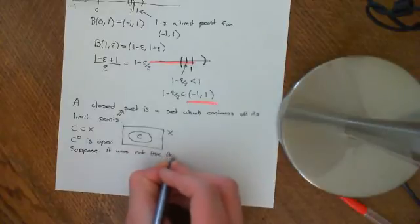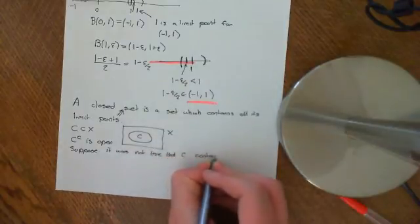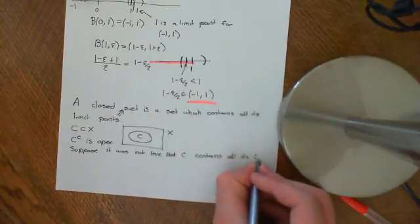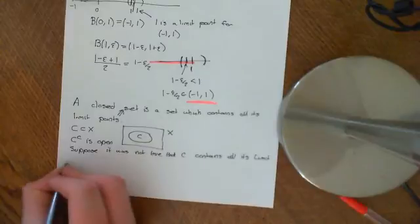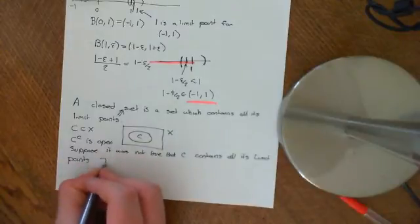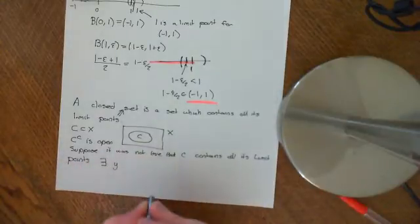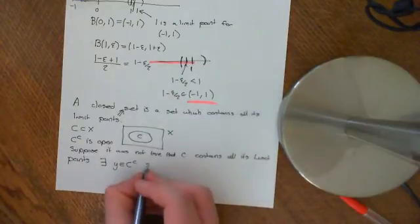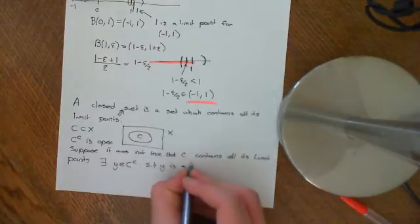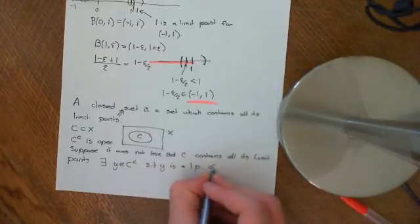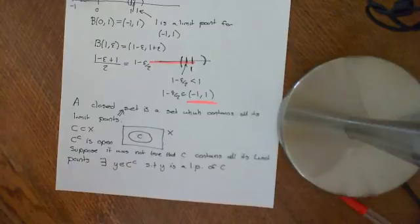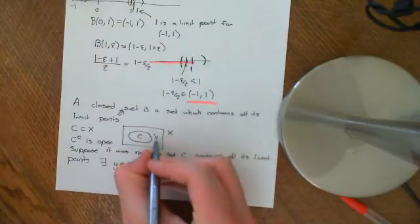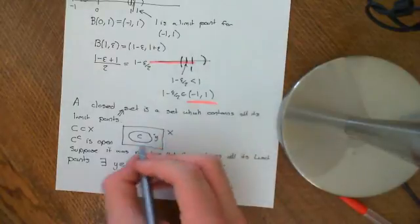Suppose it were not true that C contains all its limit points. Then what would be true? It would be true that there exists a point Y which is an element of C complement, such that Y is a limit point of C. So basically, if it's not true that all the limit points of C are in C itself, then there must be a limit point Y which is an element of C complement.